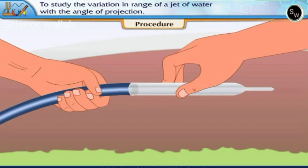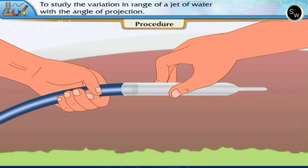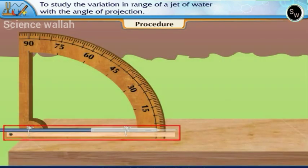Connect the pipette nozzle to the thin walled rubber tube. Fix the nozzle O to the adjustable angle bracket.